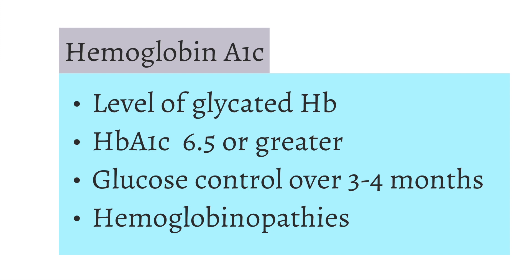The disadvantages are that this test may not be available everywhere around the world, and certain blood disorders like thalassemia and sickle cell anemia, which affect hemoglobin, may lead to false A1c levels. All the tests discussed should be completed twice a few months apart to confirm a diagnosis of diabetes, unless there are overt symptoms of diabetes.